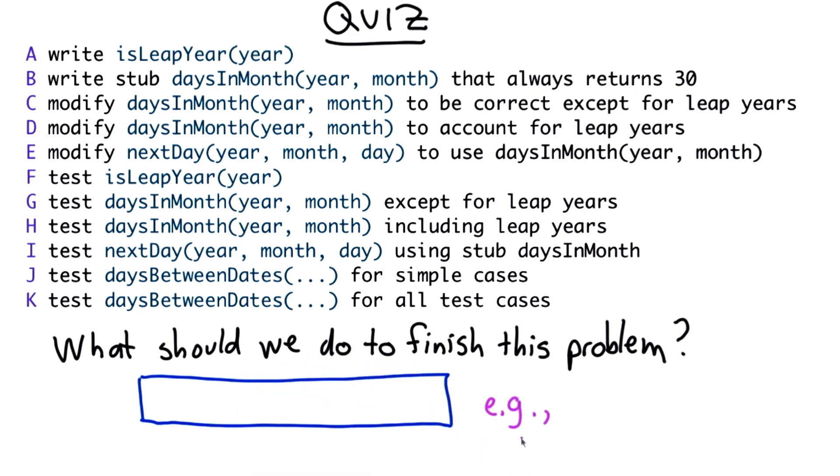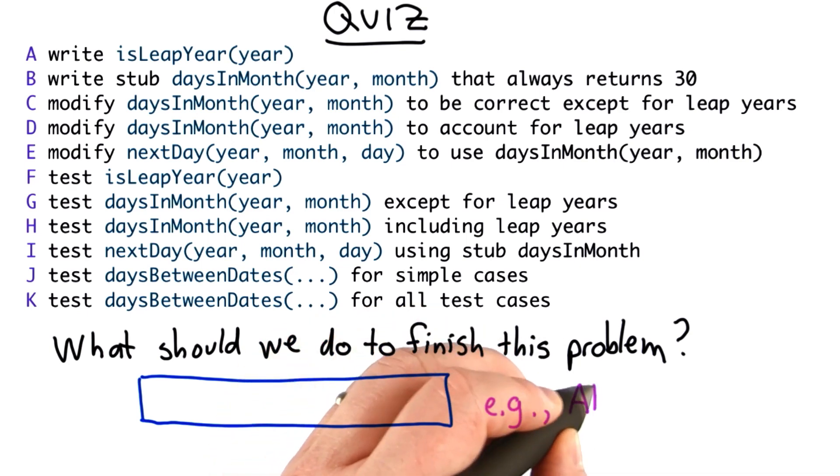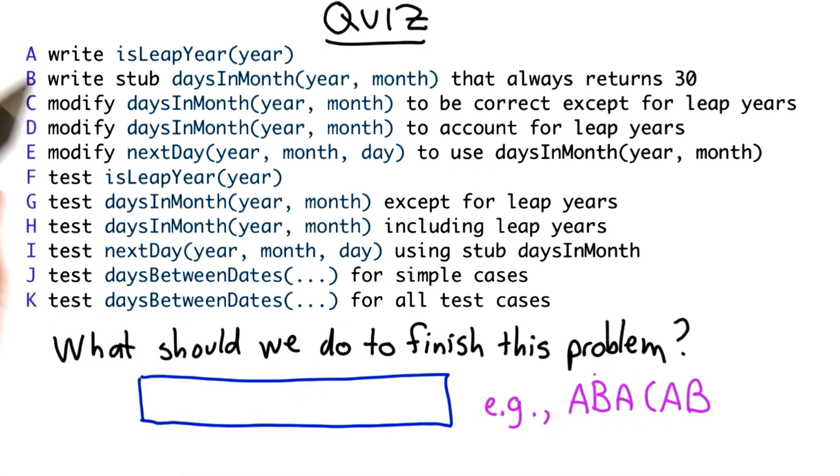So I want you to think about this and give an answer that lists the steps you would do in order, and an example to show you the format for the answer is just to put the letters in order. This is not a correct answer, but note that you can include some of the steps more than once, and you don't need to include all of the steps.